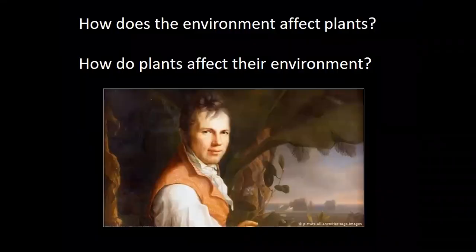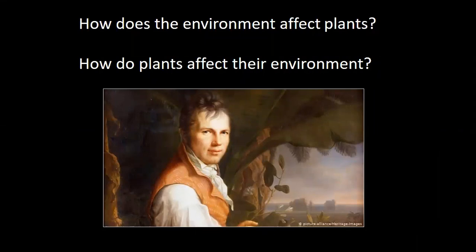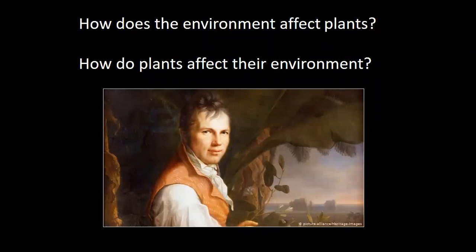Another question Humboldt asked — in a fascinating passage in the book — he was looking at palm trees, probably in Bolivia, listing all the ways the environment had affected the adaptation strategy of the palm. I love this idea: if you look at a plant, everything about that plant is a strategy for it to survive in its environment. The reason why some leaves are big is to collect light in the shade; small leaves are adapted to full sun.